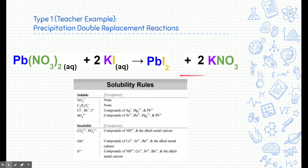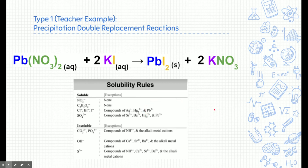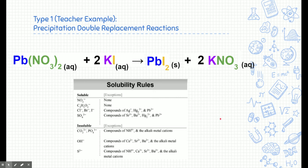Let's determine the solubility of the products. The reactants are always aqueous, but the products may or may not be. Using solubility rules: for lead(II) iodide, iodine is normally soluble, but it's attached to lead, which is an exception — so it's insoluble and is our precipitate. This is what makes it a precipitation reaction. For potassium nitrate, nitrate is soluble and there are no exceptions, so it's aqueous. That completes this reaction.